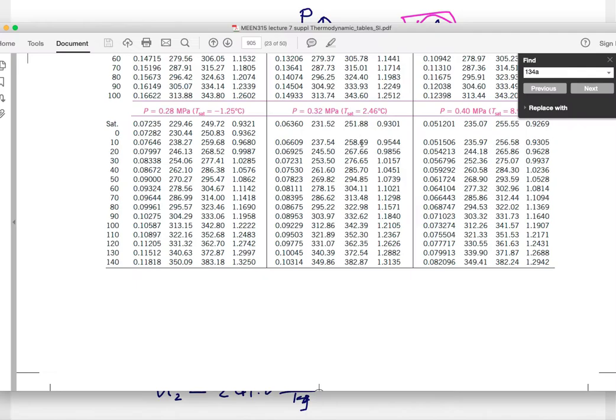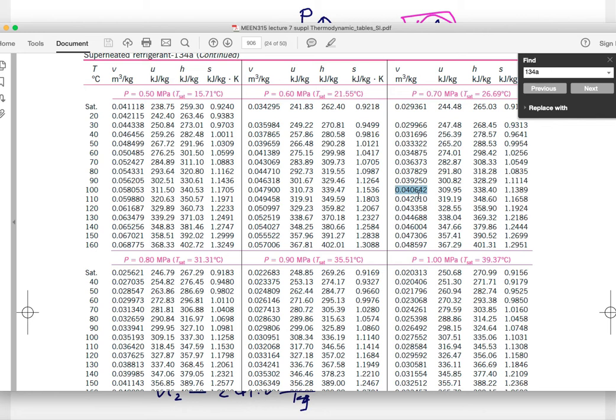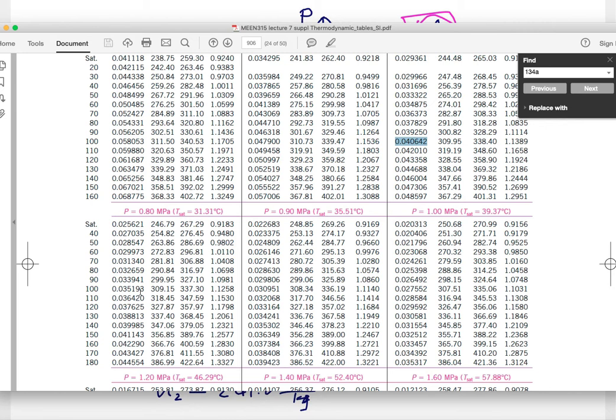You'll find everything else. The specific volume is 0.041 meter cubed per kilogram. The next pressure you have, 0.8 megapascal, the specific volume becomes 0.035.